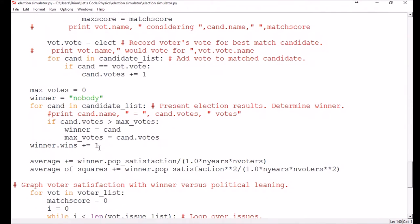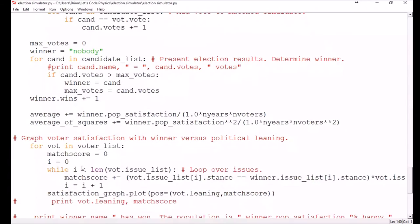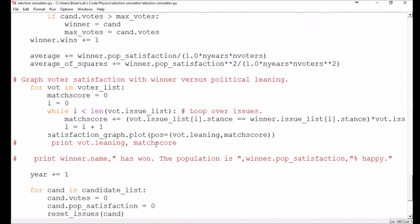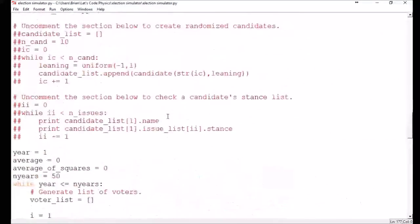But we're not just interested in who won each election. We'd also like to examine how satisfied the population is with the winner each year. So we take the winner's population satisfaction and add it to this average satisfaction here. Finally, we plot a set of data points representing each voter's satisfaction with the winner versus the voter's political leaning. Doing so will help us evaluate the question of whether voters with extreme leanings or voters with moderate leanings tend to be more or less satisfied with the outcome of an election.